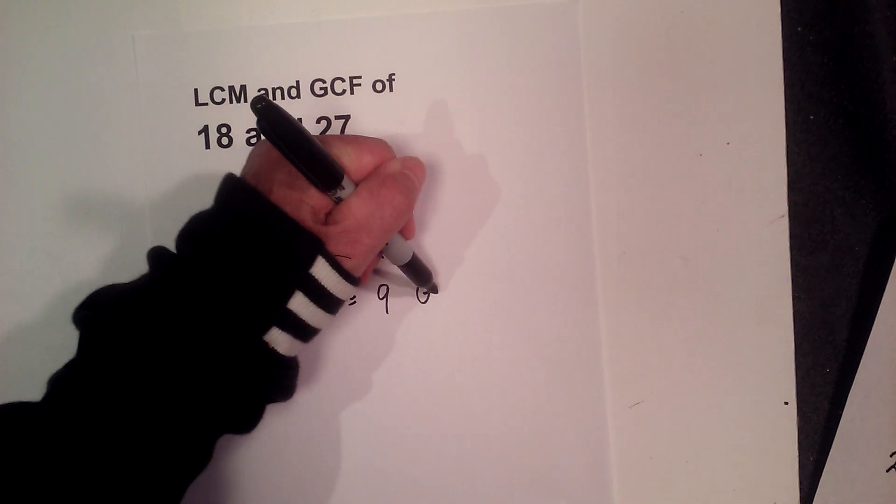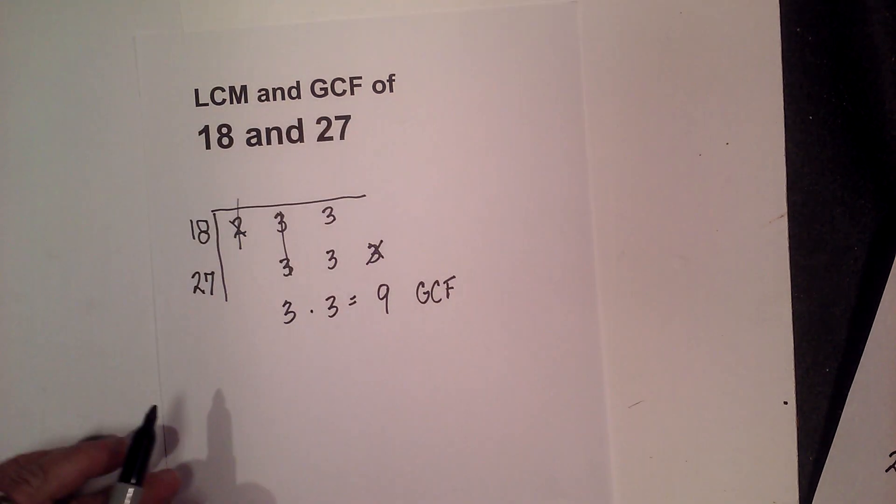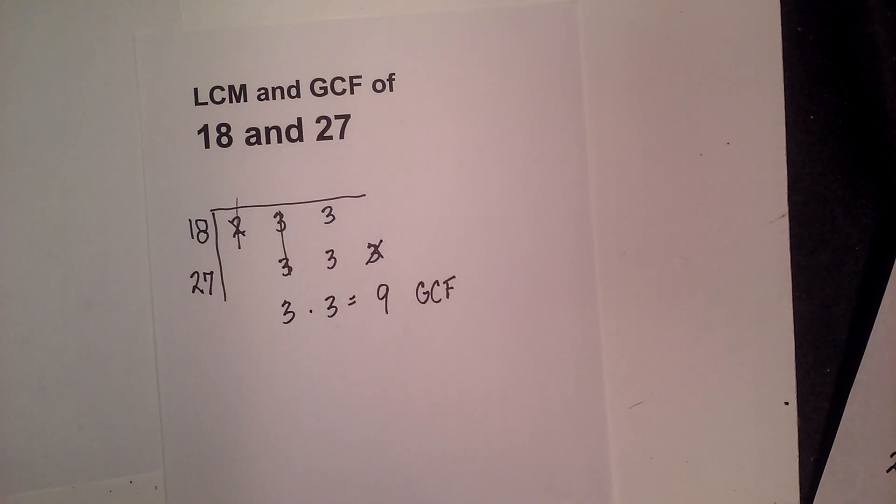So the GCF of 18 and 27 equals 9. I hope that helps. Thanks for watching, and Moo Moo Math uploads a new math and science video every day. Please subscribe and share.